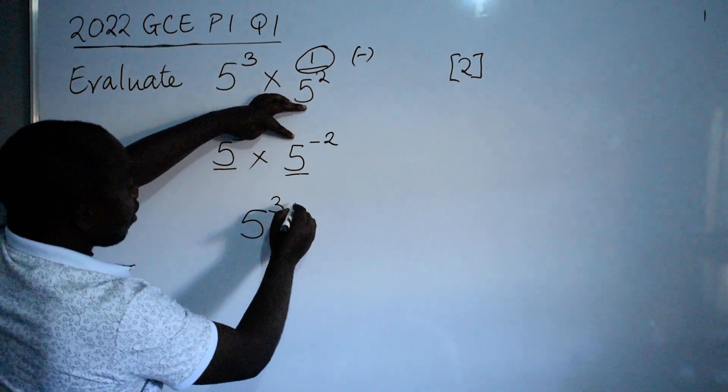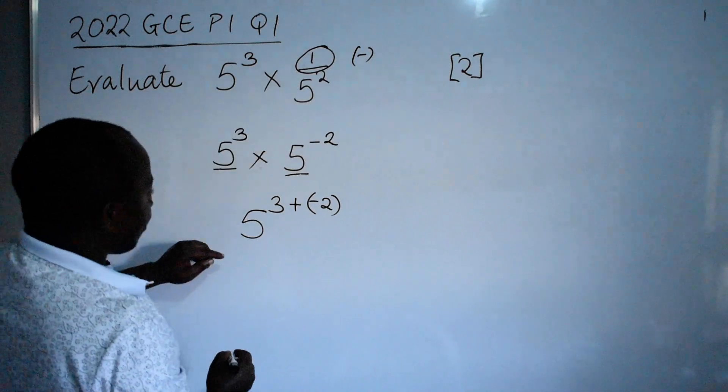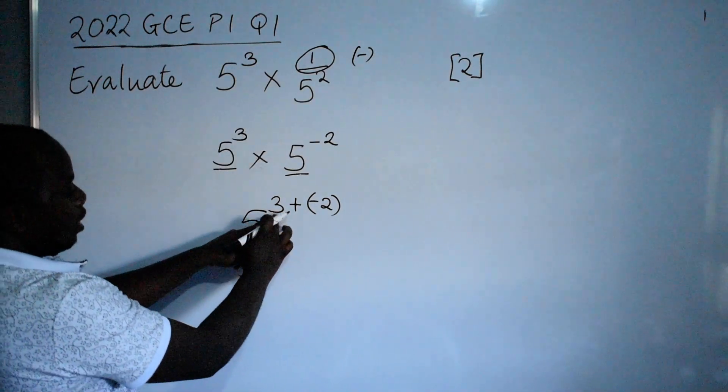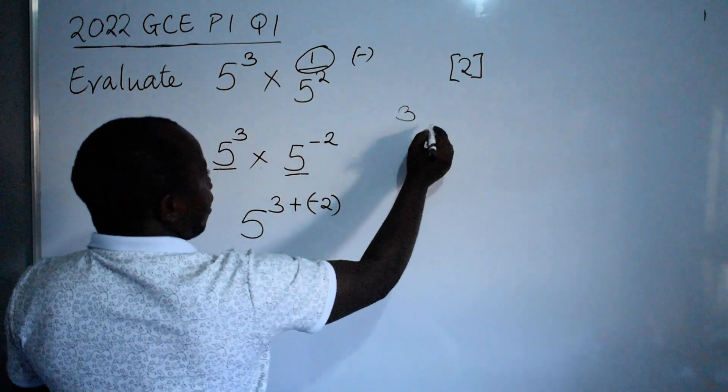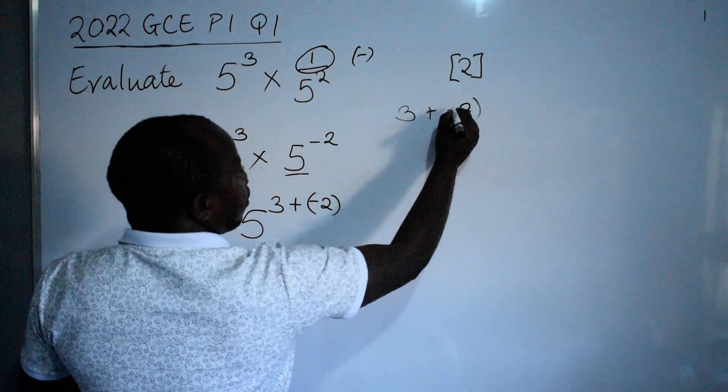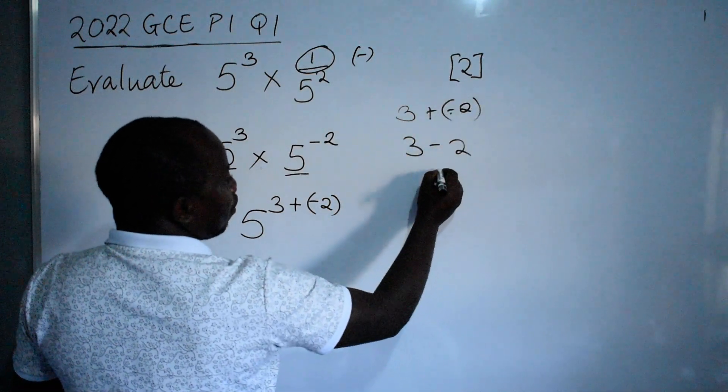Then 5 to the power of 3 plus negative 2. What answer are we getting? Here we are going to say 3 positive, negative is negative 2, so the answer is 1.